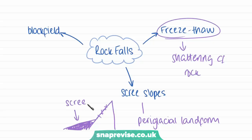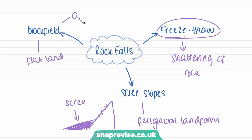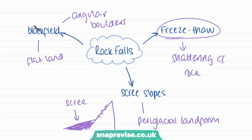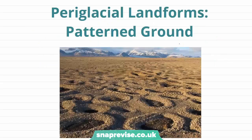This collected shattered material is called scree. Where the land is flat, we don't get scree slopes, but instead something called block fields — fields filled with angular boulders, blocks of rocks across a flat landscape, which are subject to freeze-thaw weathering.